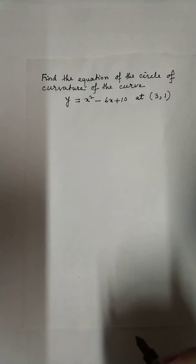Find the equation of the circle of curvature of the curve y equals x squared minus 6x plus 10 at (3, 1).